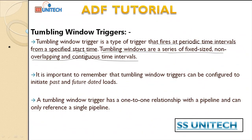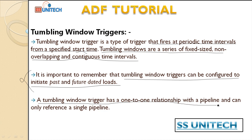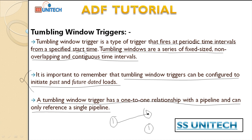It is important to remember that the tumbling window trigger can be configured to initiate on past and future dates, which we will see later in this video. A tumbling window trigger has a one-to-one relationship with the pipeline and can only reference a single pipeline. We cannot create a single tumbling window trigger and associate it with multiple pipelines — it will have only a one-to-one relationship.